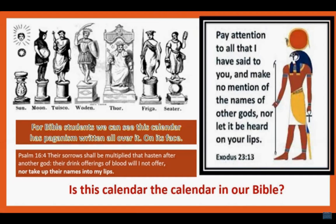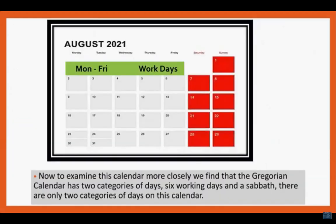We say these names when we're discussing when we're going to meet again, and we live by that Gregorian calendar — it's really difficult. But this we know: the Gregorian is a Roman calendar; this is not the calendar of our Bible, and these names are not listed for us in our Bible.